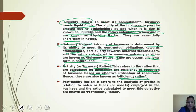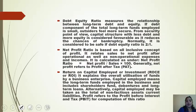Profitability ratio refers to the analysis of profits in relation to sales or funds employed in the business. Debt-equity ratio measures the relationship between long-term debt and equity.